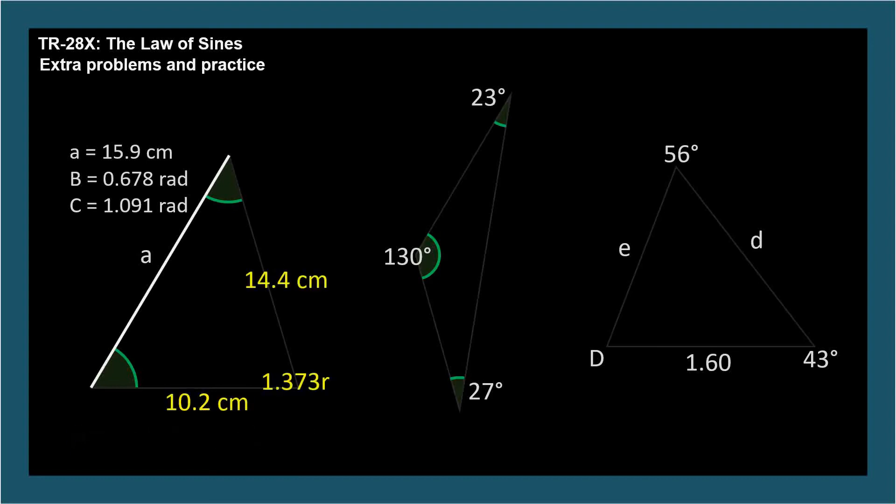For the middle triangle, we're given three angles. What did we say about this scenario? This is a special case where we can't solve the triangle. This triangle could be absolutely any size. Without knowing at least one side, we can never solve a triangle. There's no unique solution.